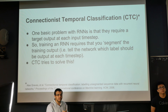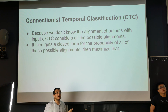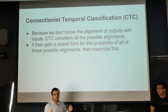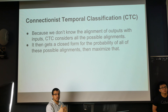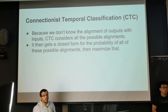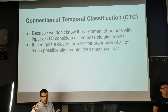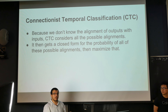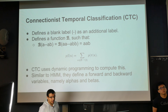What Connectionist Temporal Classification (CTC) does is solve this alignment problem — this is the thing we implemented on GPUs. Since we don't know the alignment, assume we have a speech wave file where someone is pronouncing 'cat' and the target output is C-A-T. We don't know when they said C, when A, and when T, so we consider all possible alignments, sum over them, get a closed formula for their probability, and then maximize that probability.